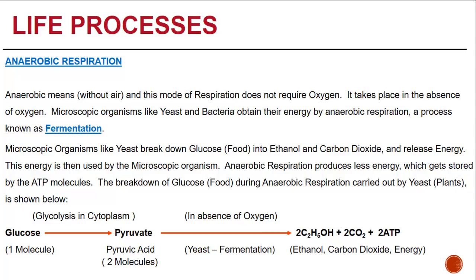The breakdown of glucose during anaerobic respiration carried out by yeast in plants is shown below. One molecule of glucose produces two molecules of pyruvate through glycolysis in the cytoplasm. In the absence of oxygen, fermentation takes place and the end products are ethanol, carbon dioxide, and energy.